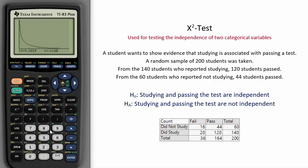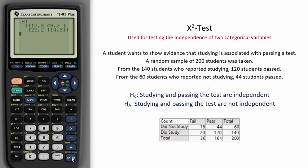If you want to get the expected values, leave this screen by clicking 2nd quit and now go back to 2nd matrix. If you go ahead and edit Matrix B, you will be able to see the expected values. The expected value for did not study and fail was 10.8, for did not study and pass was 49.2, for study and fail was 25.2, and for study and pass was 114.8.